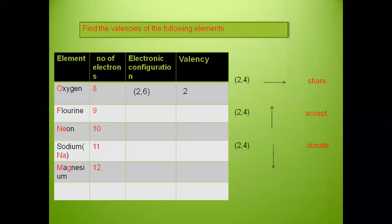There are two terms to distinguish: if I ask for the valency of oxygen, it is 2. If I ask for the valence electron, it is 6. Oxygen has 8 electrons distributed as 2,6. The second shell has more than 4 electrons, so it accepts 2 electrons to achieve the octet, giving a valency of 2.